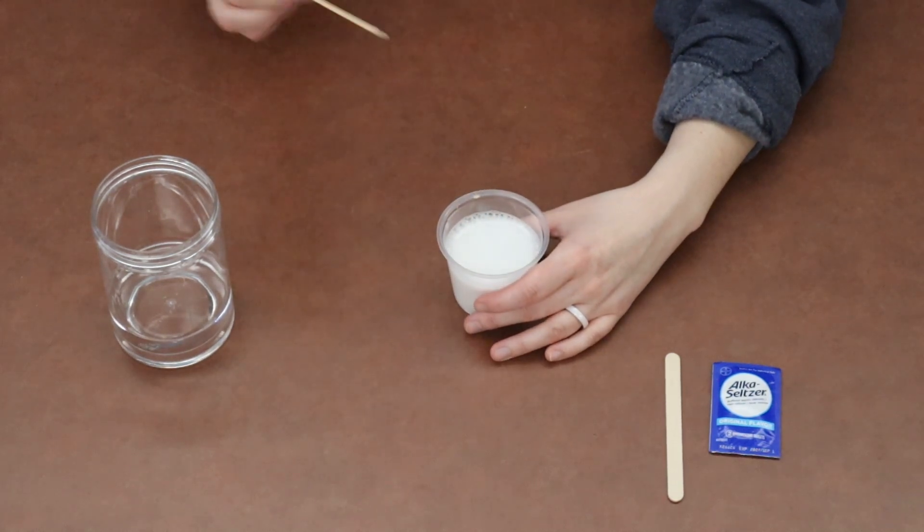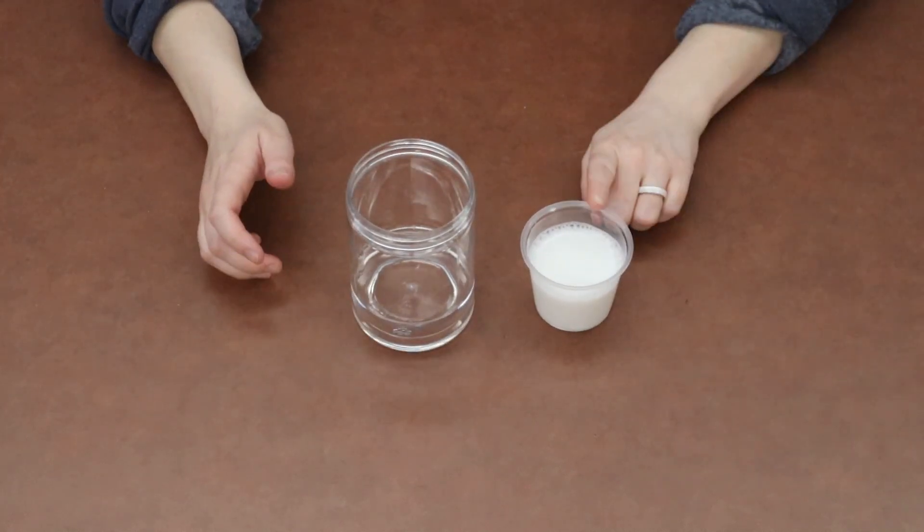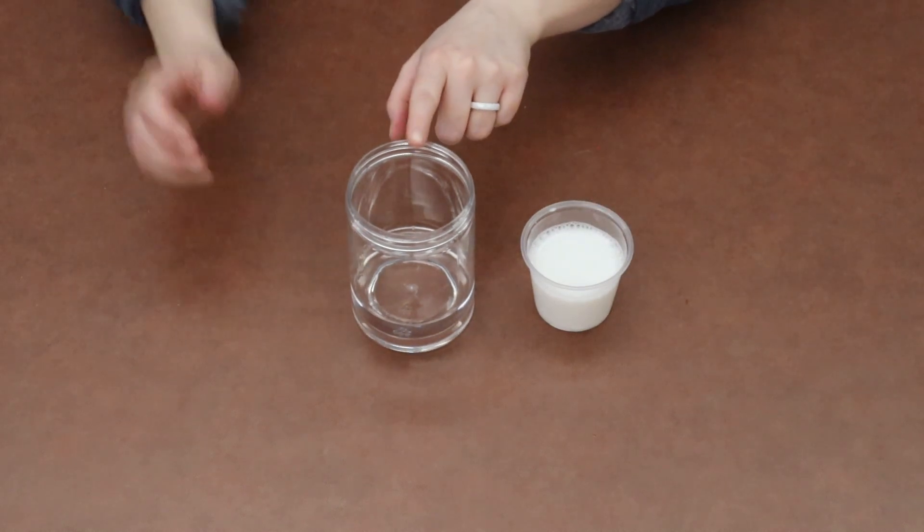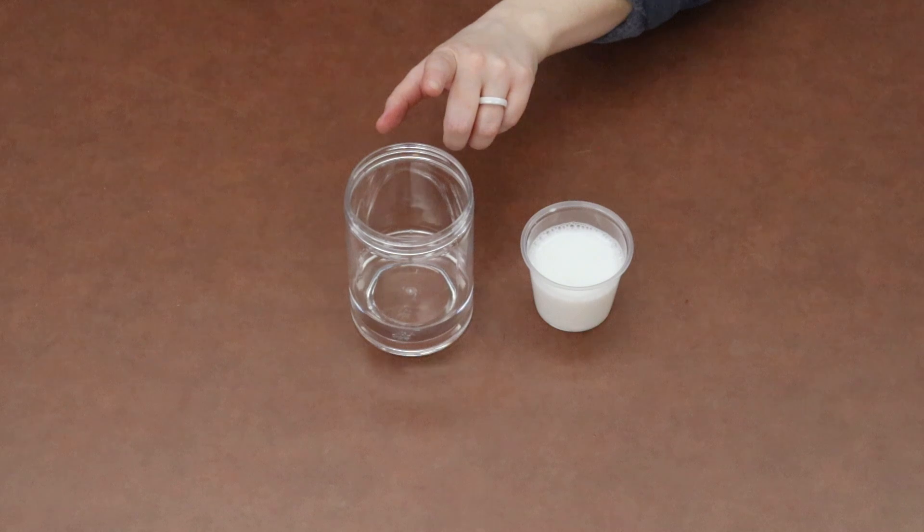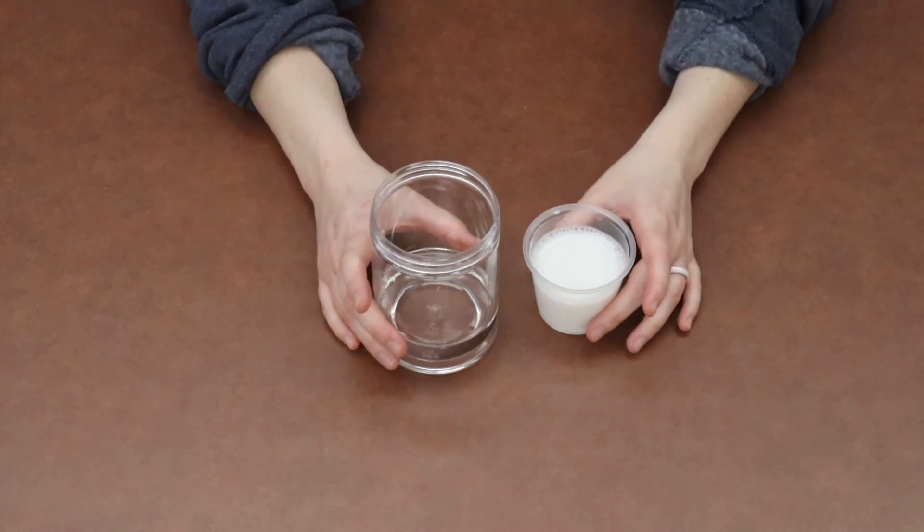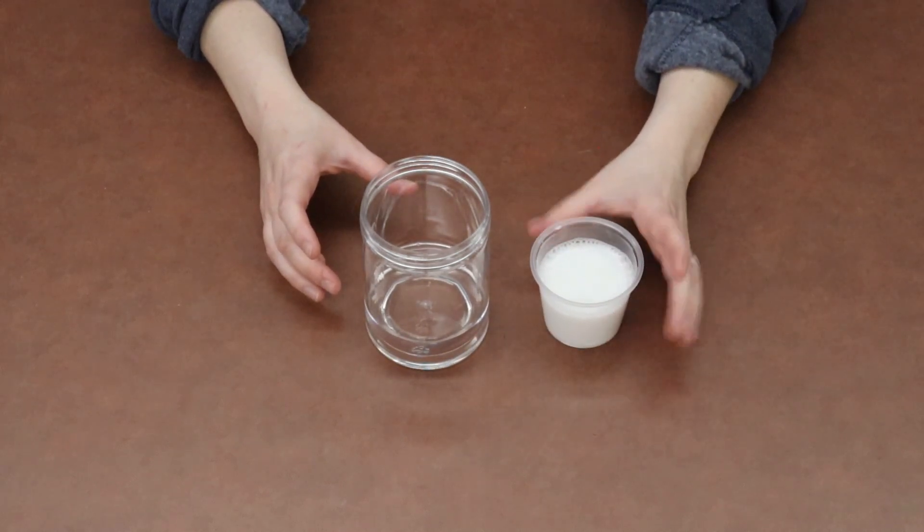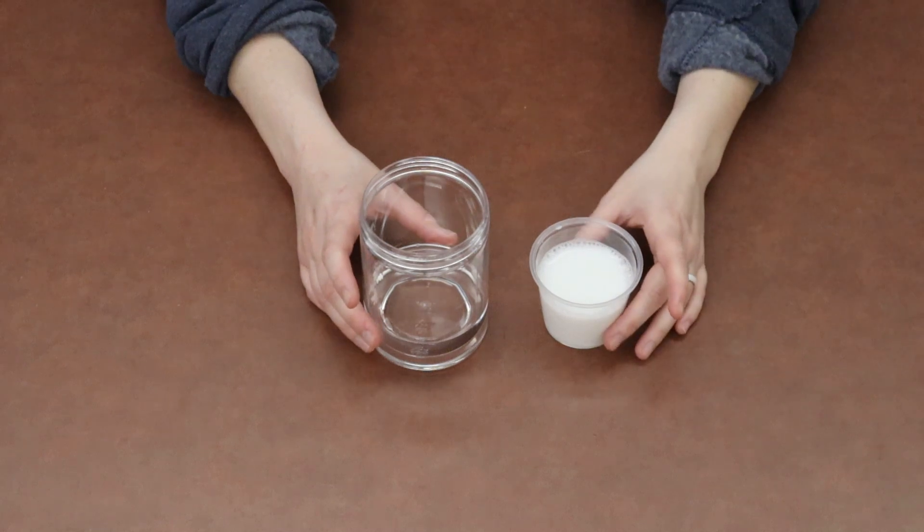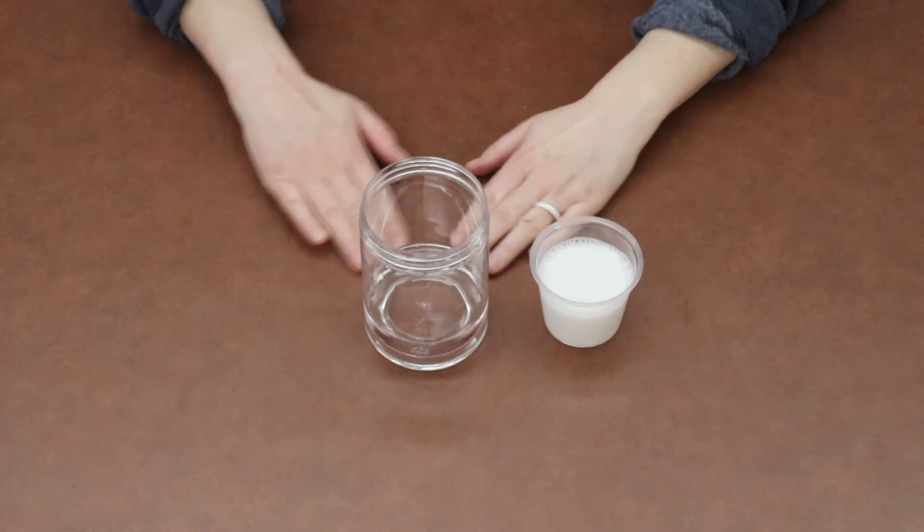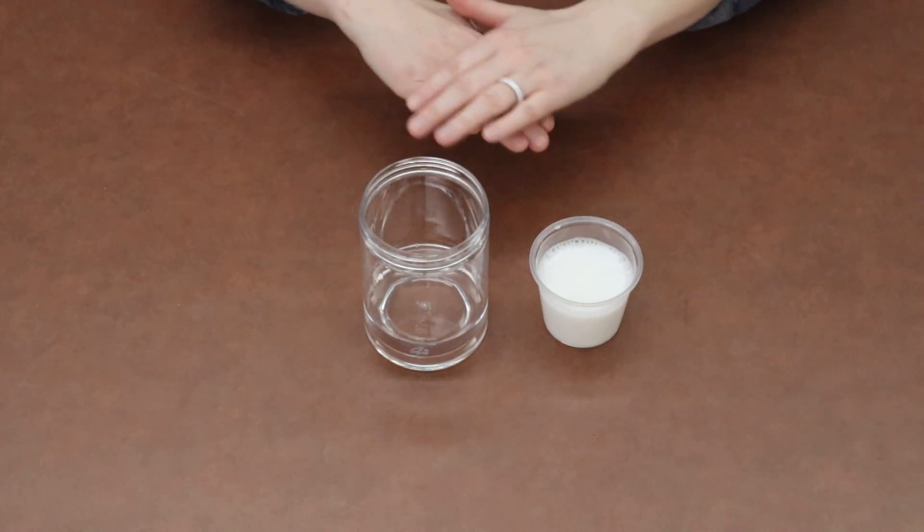We're going to set that popsicle stick aside. We're going to get ready to add our milky white water to the jar with the baby oil. And I mentioned earlier that word density. And what we're going to see happen is once we pour this water mixture into the jar with the baby oil, it's going to go right to the bottom. So it's going to be the milky water, the white water at the bottom, and then the baby oil that sits on top.